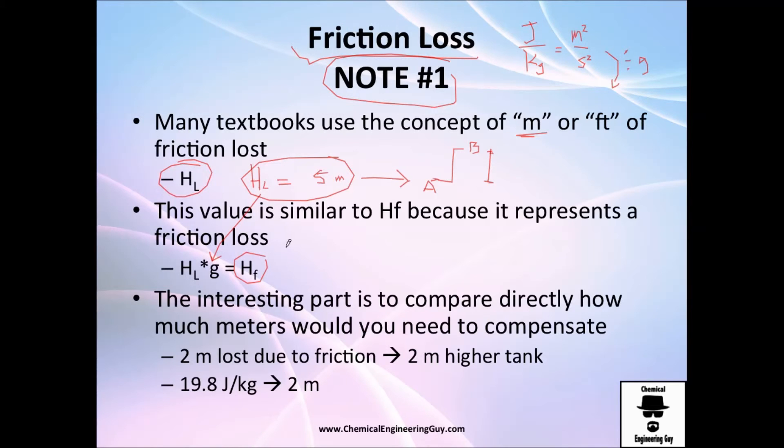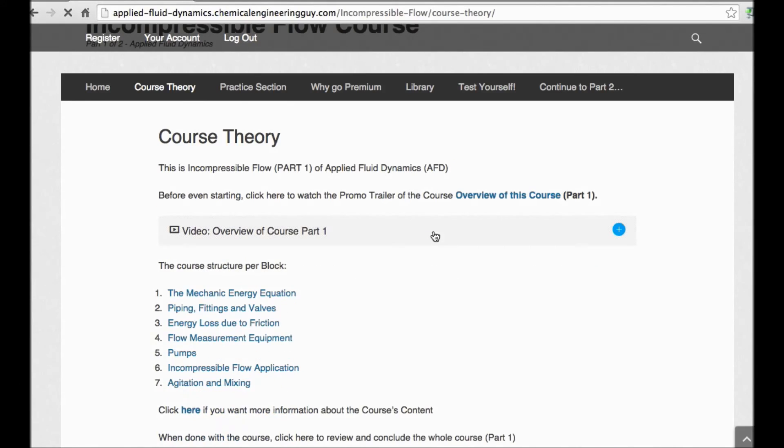You are losing five meters due to friction. But I actually prefer using hf, since I use the mechanic equation with the value of gravity. The only thing you need to do is get this value, the five meters, multiplied by gravity, which is about almost 10 meters per second squared, and you will have something about 50 joules per kilogram being lost due to friction. As I told you before, we can compare directly the loss. If they tell you five meters, that's equivalent to transporting a fluid from A to B in a five-meter height. If you have two meters, just multiply it by 9.8 and you get this value. This was a free preview.